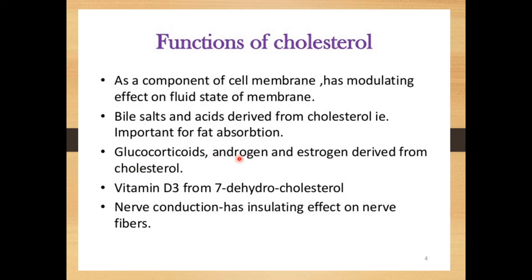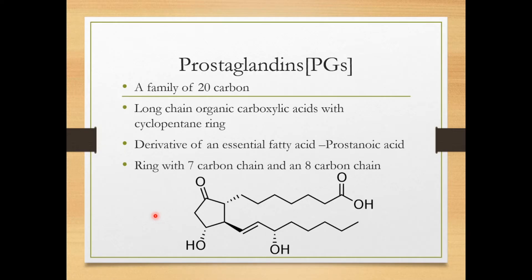Glucocorticoids and estrogen are hormones derived from cholesterol. An example of an androgen is testosterone, which is the male sex hormone; estrogen is the female sex hormone — both are derived from cholesterol. Vitamin D3 is derived from 7-dehydrocholesterol. Cholesterol also has an insulating effect on nerve fibers and plays an important role in nerve conduction.